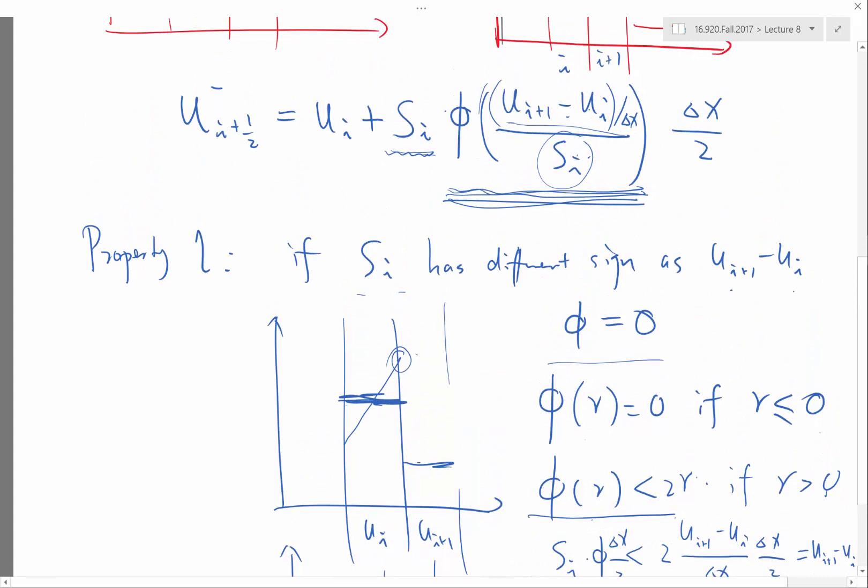meaning that the slope indicated by the difference between the volume averages is exactly the same as what you would be reconstructing from a different source. So that's what happens when you have a perfectly linear function.